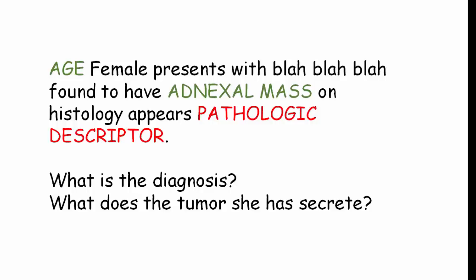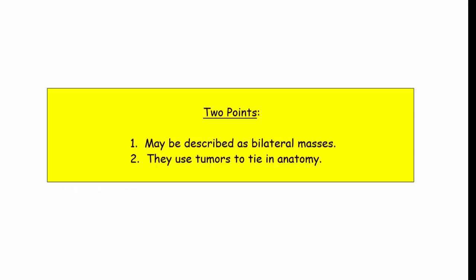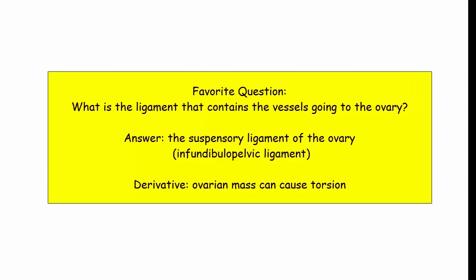Two quick points. One is that almost all of these tumors can be bilateral, so don't be thrown if they tell you there are multiple adnexal masses. This is also a place where they love to incorporate anatomy. What is the ligament that holds the vessels going to the ovary? That is the suspensory ligament of the ovary, or the infundibulopelvic ligament. A mass in the ovary can cause torsion about this ligament and cut off blood supply.